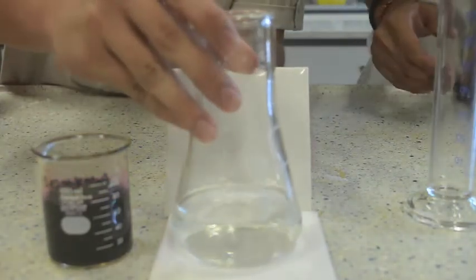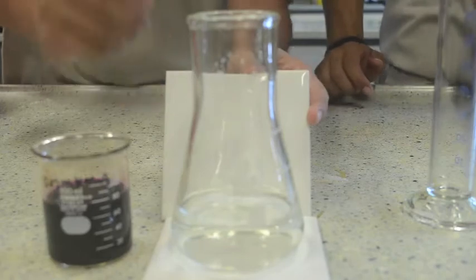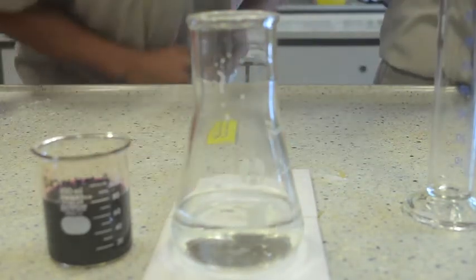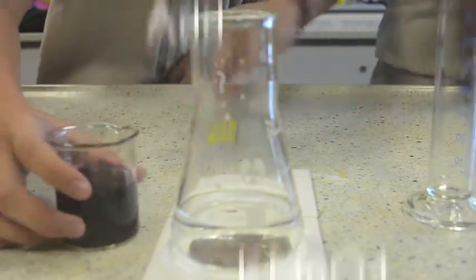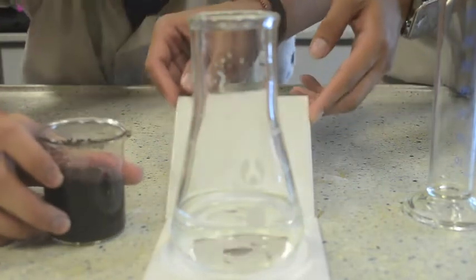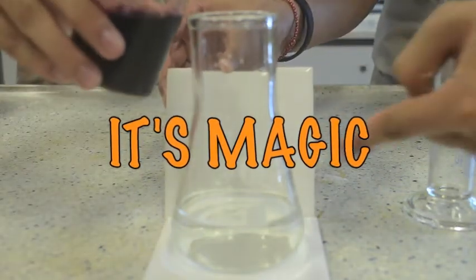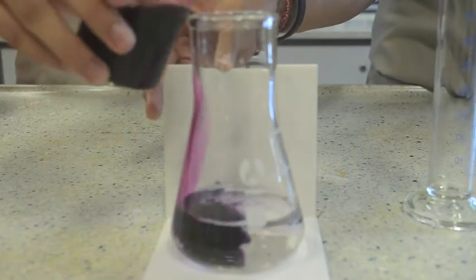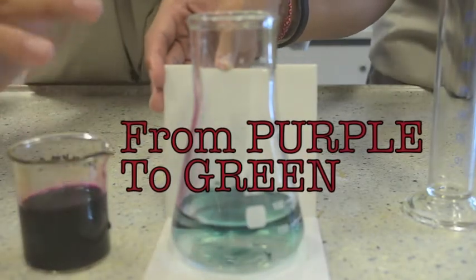Okay, now since the sugar is dissolved, we are going to add KMnO4. It's magic. From purple, it becomes green.